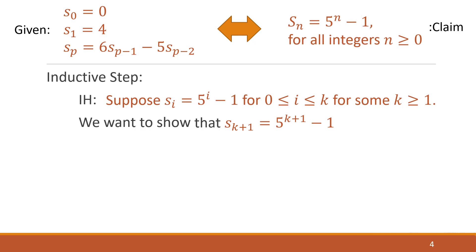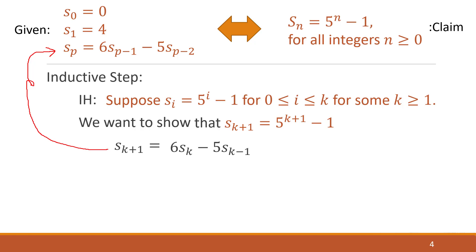We want to show that s(k+1) = 5^(k+1) − 1. We start with s(k+1). We can't use the closed form claim since that's what we're trying to prove, but we can use what's given — the recurrence relation. So s(k+1) = 6·s(k) − 5·s(k−1), adjusting the indices appropriately since we have k+1 in place of p.